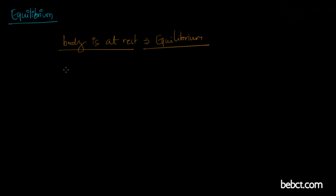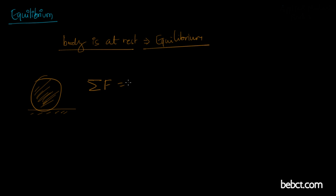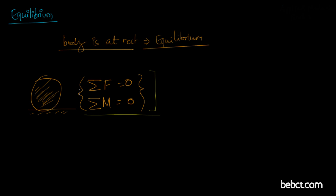Welcome back. In this video we are going to talk about equilibrium. Equilibrium is a condition of a body when the body is at rest. What makes a body be at rest? If there is a ball, why doesn't it move? Because the sum of forces acting on the ball is zero, and there is no net moment acting on the ball. If a body satisfies these two conditions — sum of forces is zero and sum of moments is zero — then the body is at rest.